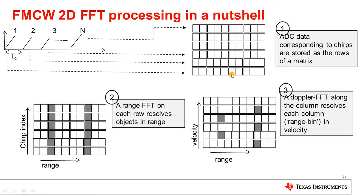Each row here corresponds to samples from a specific chirp. An FFT called a range FFT is then performed on each row. And this range FFT resolves objects in range. Here you have the results of the range FFT. You can see here that this third range bin and this range bin over here, both of these range bins have objects in them. Note that the x-axis is actually the frequency corresponding to the range FFT bins. But since range is proportional to the IF frequency, I can equivalently plot this axis as the range axis.